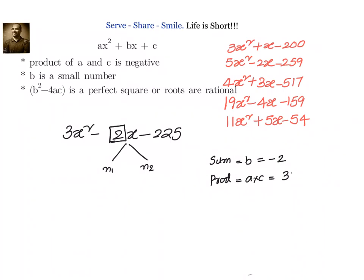Product is a into c, that equals 3 into minus 225, that is equal to minus 675.